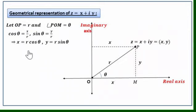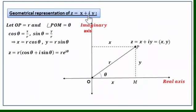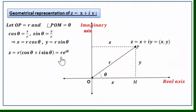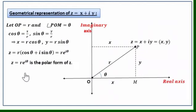From the right-angle triangle, cos θ = x/r and sin θ = y/r, so x = r·cos θ and y = r·sin θ. Substituting into z = x + iy: z = r·cos θ + i·r·sin θ = r(cos θ + i·sin θ). By Euler's formula, cos θ + i·sin θ = e^(iθ), so z = r·e^(iθ). Thus every complex number z = x + iy can be expressed in polar form z = r·e^(iθ).